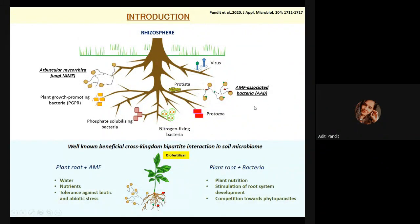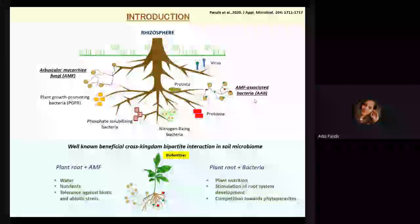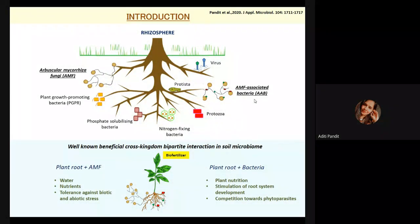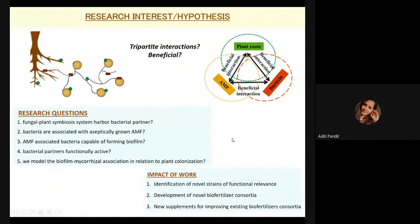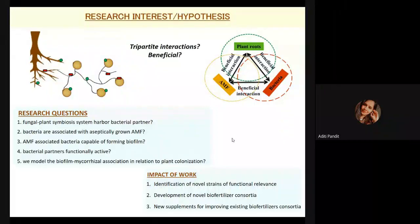Here we are focusing on bacteria which are stringently associated with mycorrhizal fungi, and we gave this new terminology: AMF-Associated Bacteria, or AAB. There is a lot of literature on beneficial bipartite interactions between plant roots and AMF, and plant roots and bacteria. These microorganisms help in plant development for nutrient uptake, water uptake, and tolerance against various biotic and abiotic stresses. They support the plant system and are also helpful for soil structure and fertility. But what was unknown is the tripartite interaction between roots, mycorrhiza, and associated bacteria.